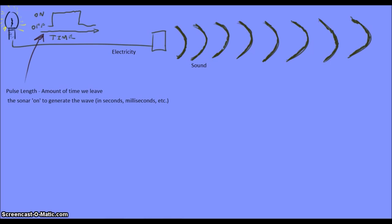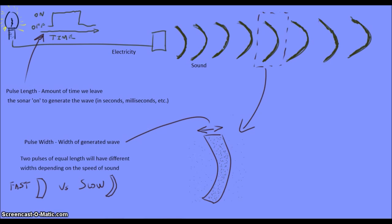Pulse width is just what it sounds like, the width of the wave generated. Pulse length and pulse width are related through the speed of sound. Two pulses of equal length would have different widths in fresh and salt water, as the speed of sound is different between the two mediums.